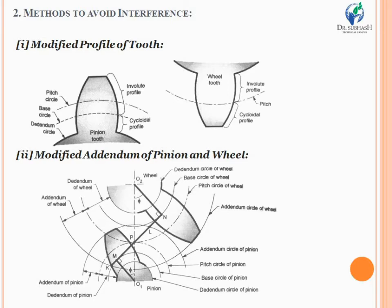Now look at the slide giving the methods to avoid interference. There are several methods through which interference between two mating gears can be avoided. If we increase the size of the base circle, the involute curve becomes more and more flat. If the radius of the base circle becomes infinitely large — as in the case of a rack and pinion assembly — its profile becomes straight, and there are more chances of interference because the involute tooth profile is no longer maintained.